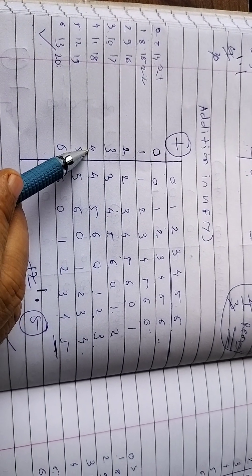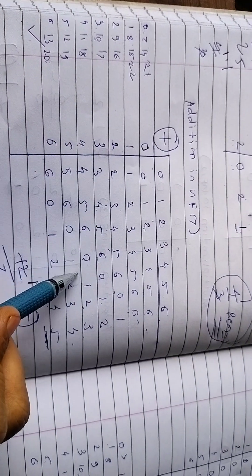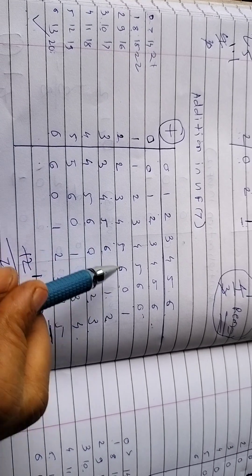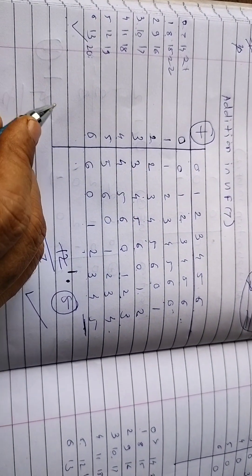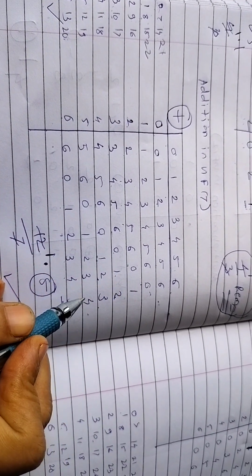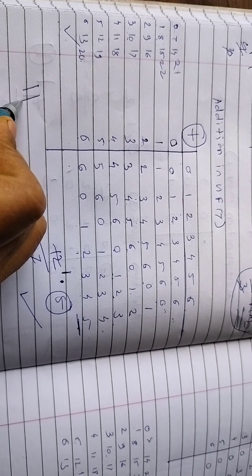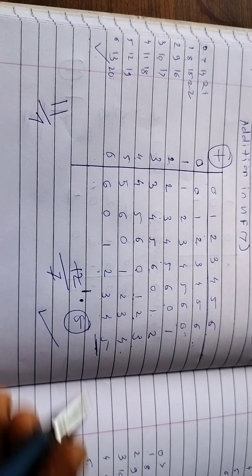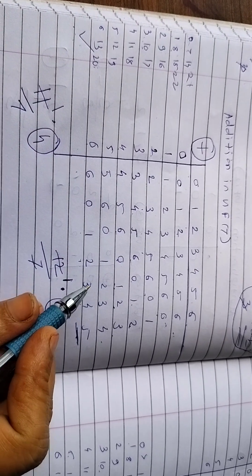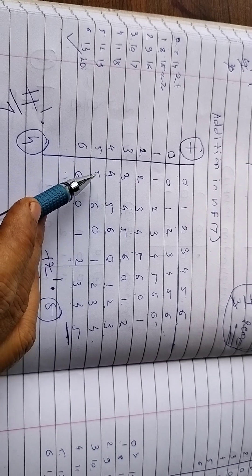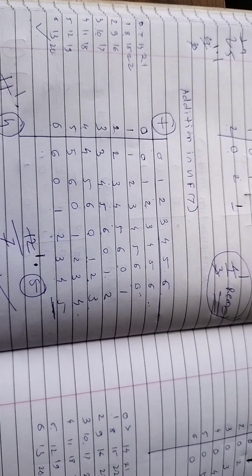Let us try some random examples for GF(7) addition. 4+4=8; looking up the table, 8 equals 1, so write 1. Next, 6+3=9; 9 equals 2. For 5+6=11: using the mod method, 11 divided by 7 gives quotient 1, remainder 4. So 5+6=4 in GF(7). You can use either method to find any addition result.